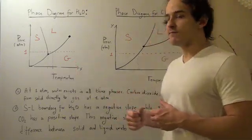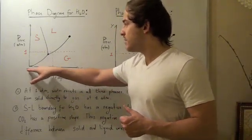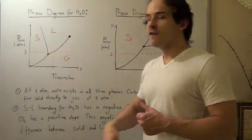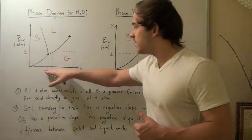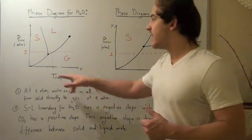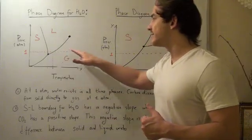Let's look at the water diagram first. So at low temperatures, from here to here, we can find water in the solid state. At medium temperatures, from here to here, we can find water in the liquid state. And finally, at higher temperatures, above this temperature, we can find water in the gas state.